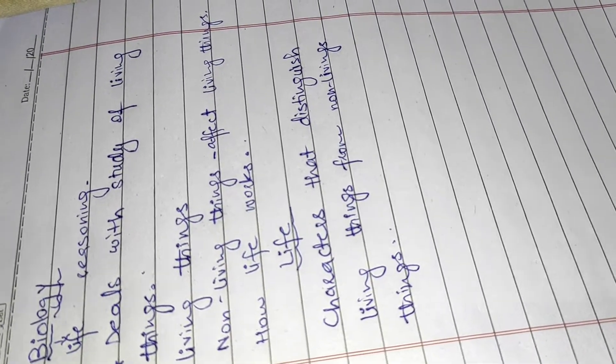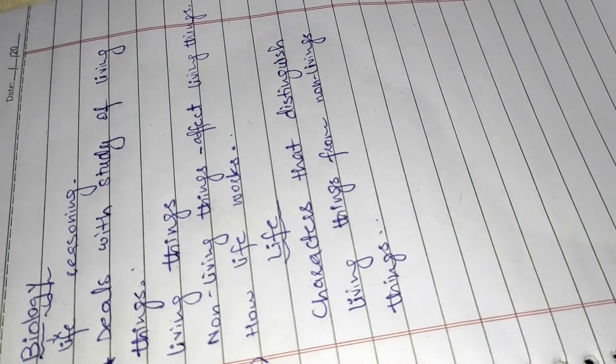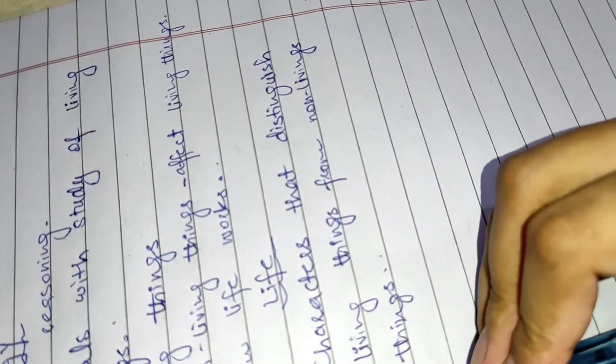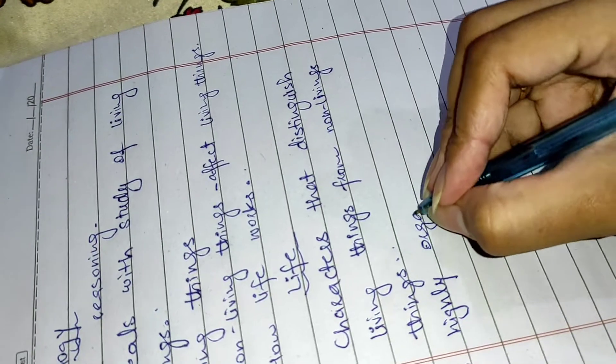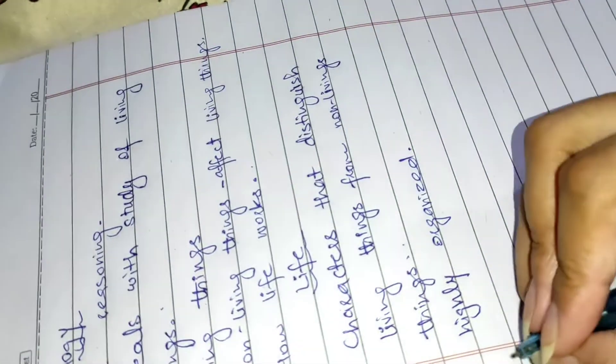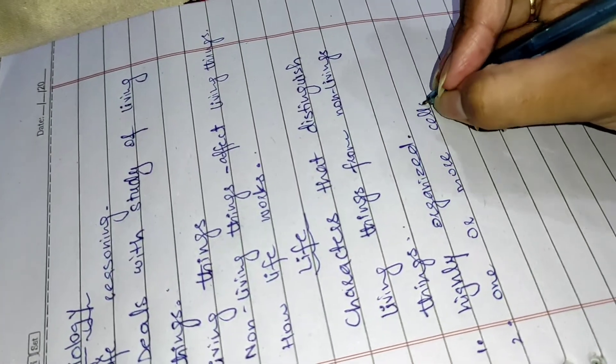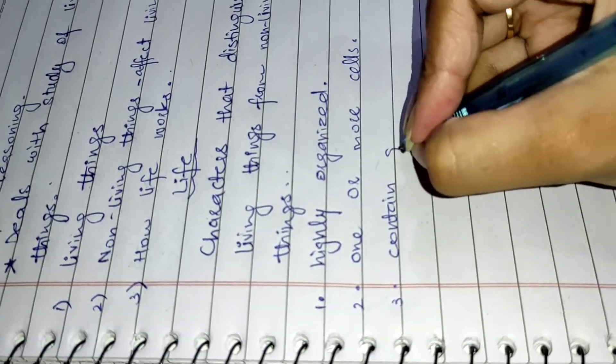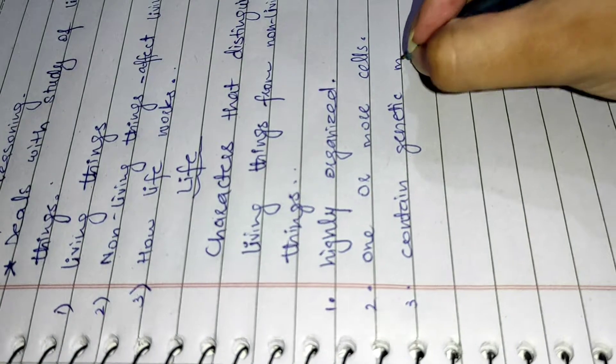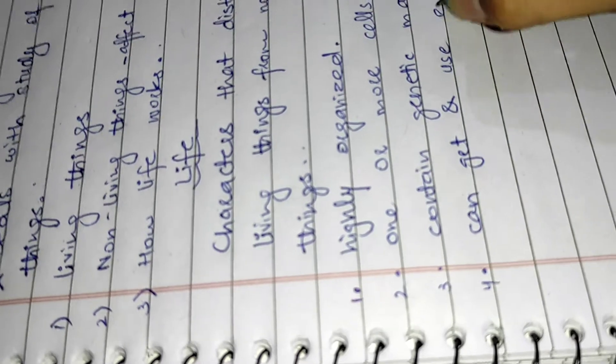The third point is that energy can be used. They can get energy through different food sources. They gain their energy and utilize it. Now we'll try to write it down. The first one is they are highly organized and have complex bodies. Second is have one or more cells. The third point is they contain genetic material.